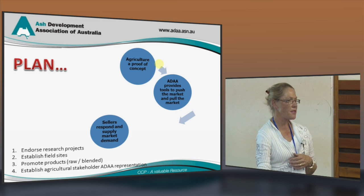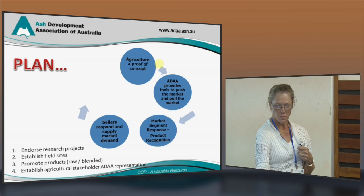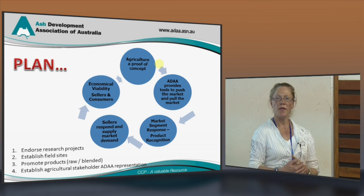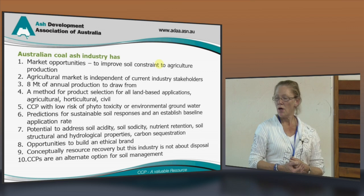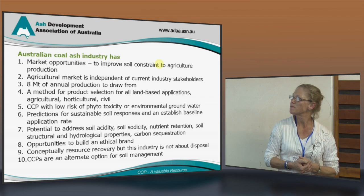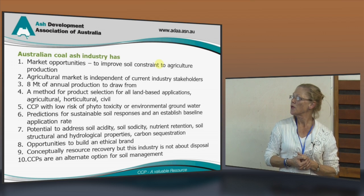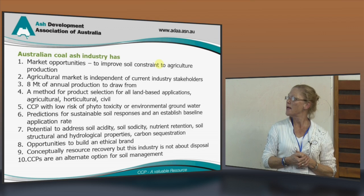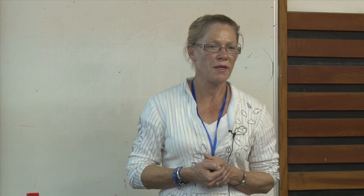As generators, the power stations need to respond and actually say that they're going to supply the market for agriculture. We also need to develop product recognition and, in the end, establish economic viability. In summary, for our Australian coal ash industry, we do have market opportunities and we can solve the problems of Australian plant production. Our agricultural market is independent of current industry stakeholders, we've got 8 million tonnes available to draw from, and the major thing is that we suggest CCPs are an alternate option for soil management. Thank you.